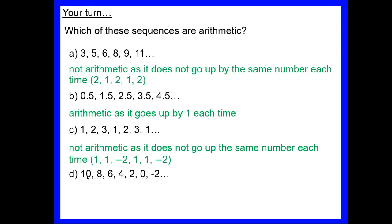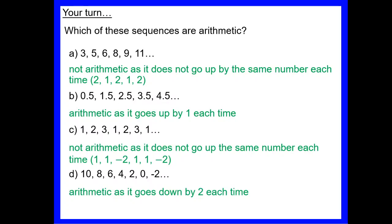Our last one goes down by 2, down by 2, down by 2 — we've continually gone down by 2, so yes that one is arithmetic as it goes down by 2 each time. The key learning point: to be arithmetic a sequence must go up or down by the same number each time, either by adding or subtracting.